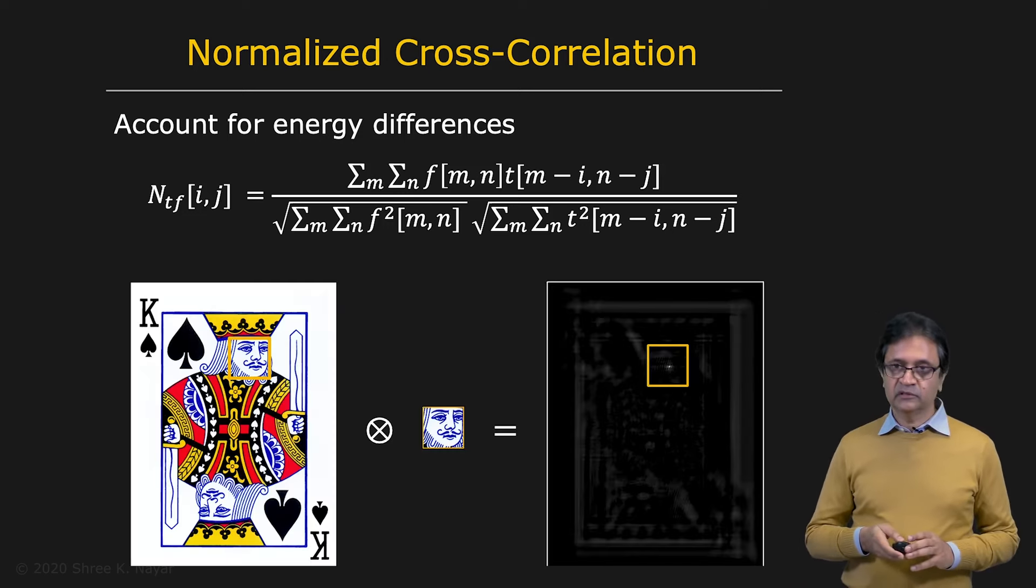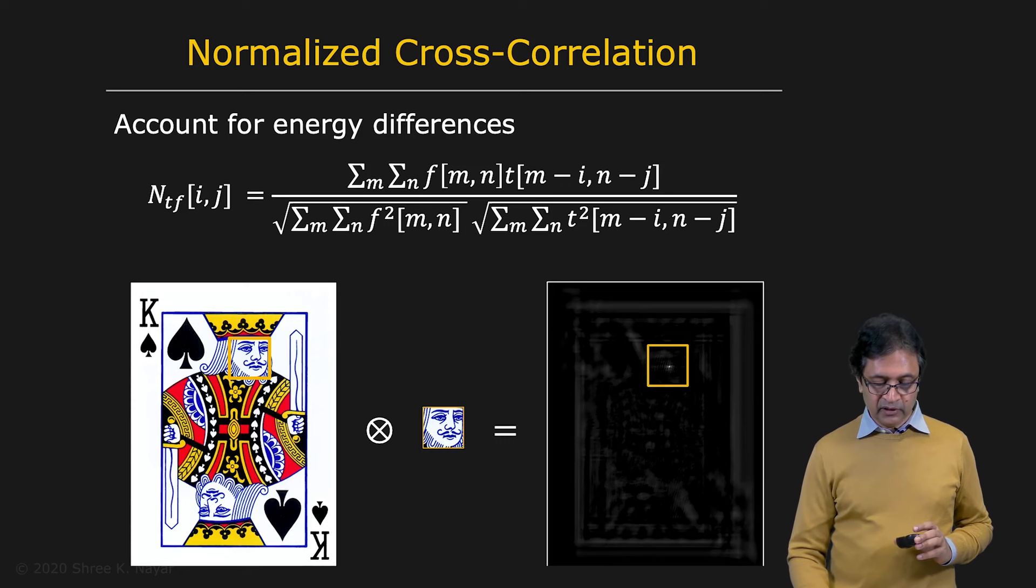So let's take a look at how this works in a real image and a real template. Here's the template we started off with in the beginning. Here's your image. And you find here, if you look closely, that the brightest point in this normalized cross correlation map is this point right here, which is exactly where the template lies, where the template should match the image.